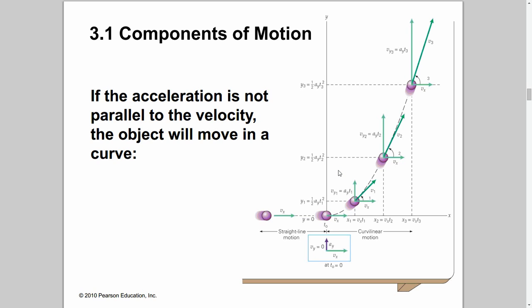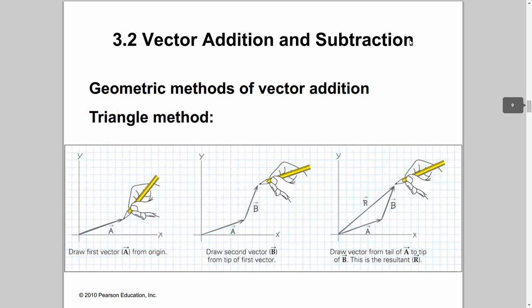If the acceleration is not parallel to the velocity, the object will move in a curve. For example, a ball moving in one direction with acceleration acting in the y direction will curve that way — like a baseball with spin, which causes acceleration in one direction and makes the ball curve through the air. Similarly, a curve shot in pool causes the ball to accelerate in one direction. To calculate this, we separate the x and y components using a triangular method. For the resultant vector, we draw vectors tip to tail.